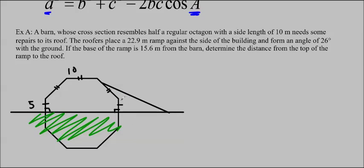I'm also going to extend this right here to make us a little triangle. The roofers place a 22.9 meter ramp against the side of the building and form an angle of 26 degrees with the ground. If the base of the ramp is 15.6 meters from the barn, determine the distance from the top of the ramp to the roof.